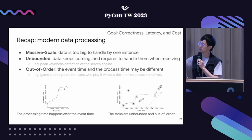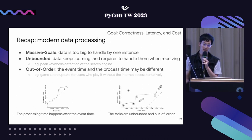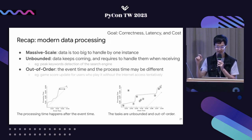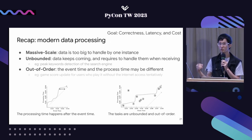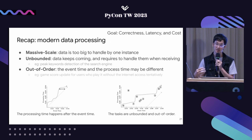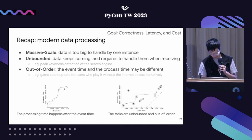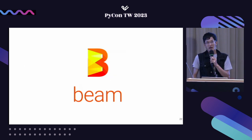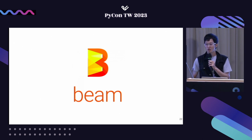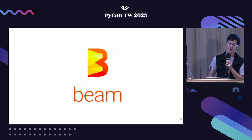So let's do a short recap. Modern data processing has three things we care about. First is massive scale — data is too big to handle under any single instance. Second is unbounded — data keeps coming and you need to handle it as it arrives. Third is out-of-order — the event time and process time are different. The goals are: correctness at a certain level, latency within acceptable thresholds (say every 20 seconds or every minute), and acceptable cost. Today our main character is Apache Beam.